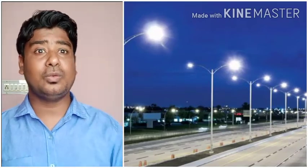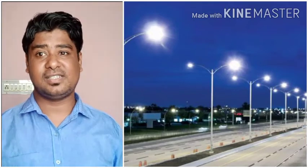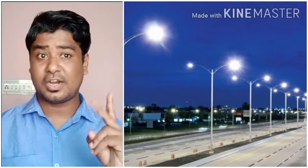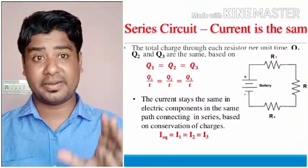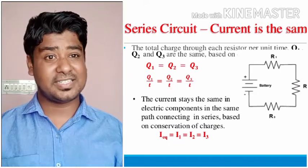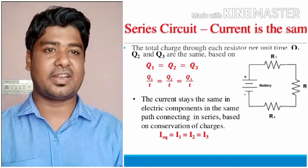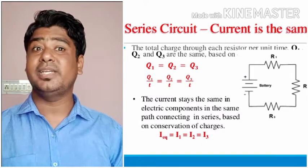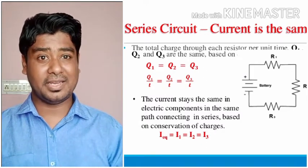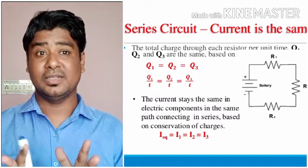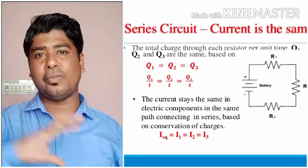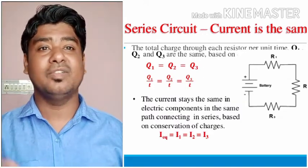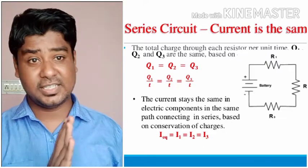We need to study how resistance is affected in a series connection. There is one very important thing to remember: when the resistors are connected in series in a circuit, the current flowing through each of the resistors will be the same. If hundreds of bulbs are connected in series, the current through all hundred bulbs will be the same.